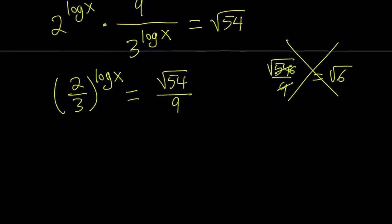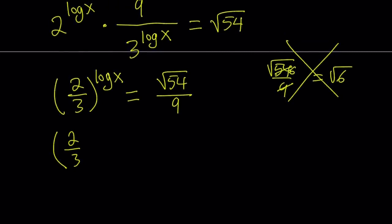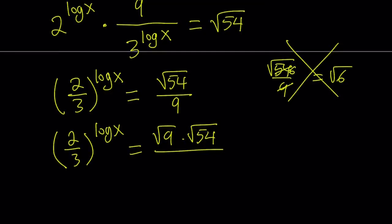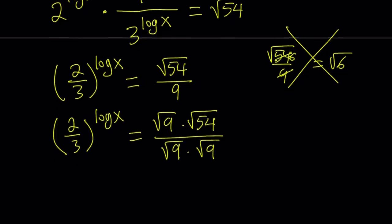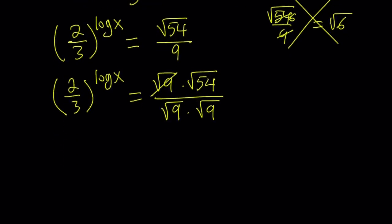So I can go ahead and take the square root of 54 and notice that there is a 9 at the bottom. So I can go ahead and write the square root of 54 as square root of 9 times square root of 54. And I know the square root of 9 is 3, but let's just leave it at that. And then the 9 can also be written as square root of 9 times square root of 9.